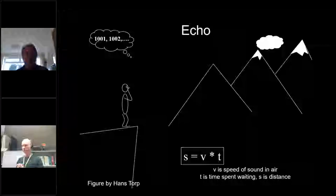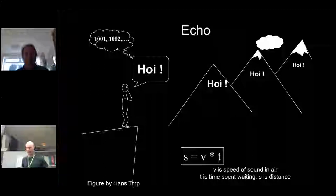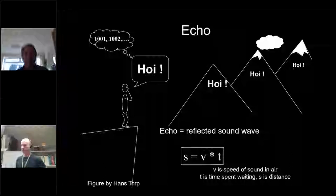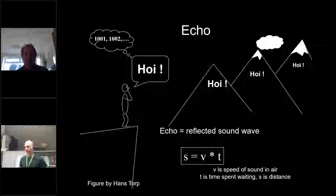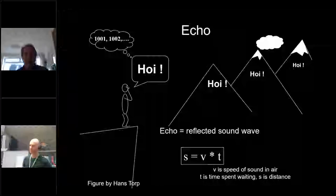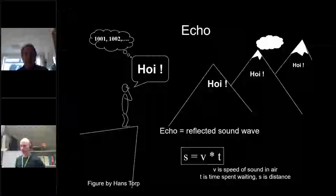We will start with this: mountains — something everybody in Norway loves. If you are in the mountains you can shout and then, if you wait a little while, you will hear it back. This is an echo — a reflected sound wave. If you've brought your stopwatch you can figure out how far the mountains are, because you can measure the delay. During that delay the sound has traveled to the mountain and back. Knowing the speed of sound — around 340 meters per second — you can calculate the distance. This is actually the most central thing we do in ultrasound.